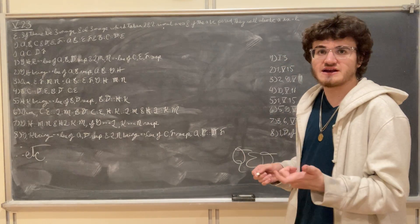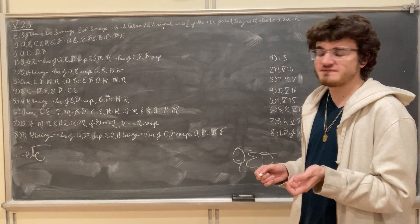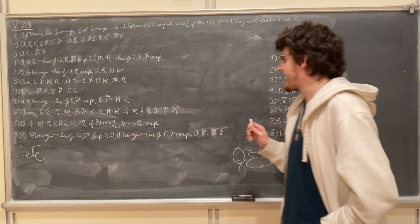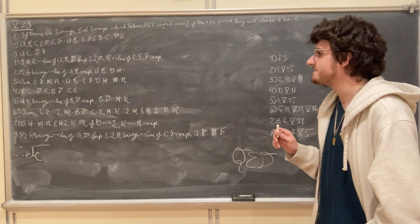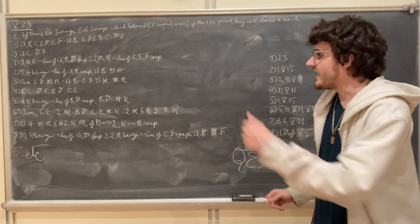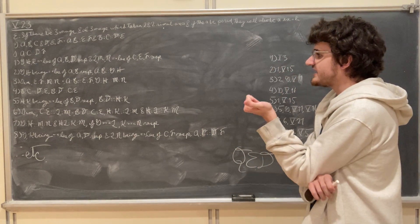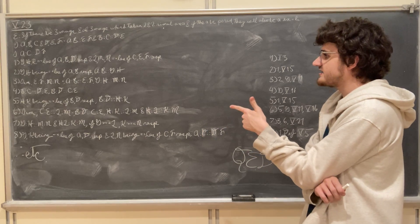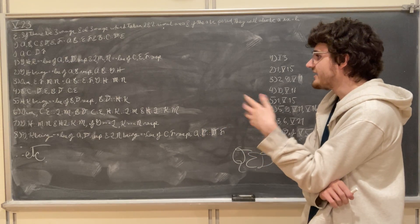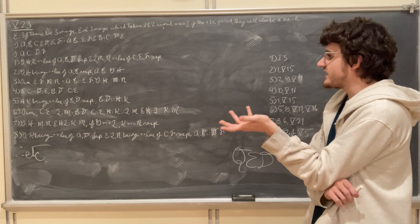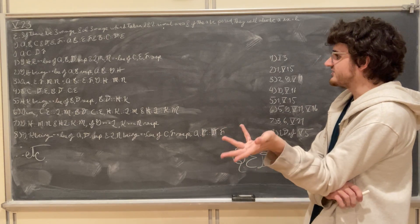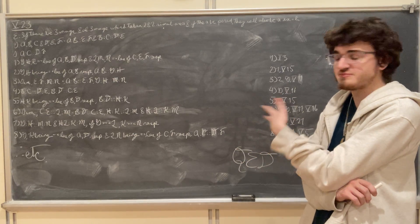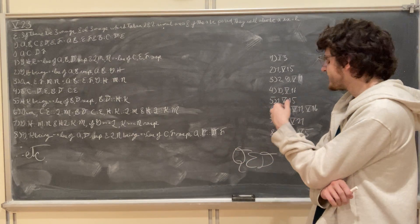Alternating this again by Proposition 5.16, we can say that H is to L just as K is to M. We established G is to H just as M is to N in step 3, and H is to L just as K is to M in step 6.